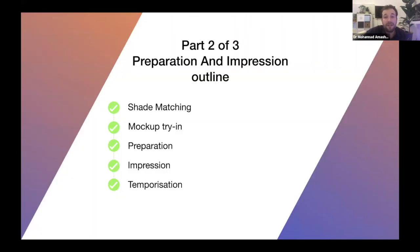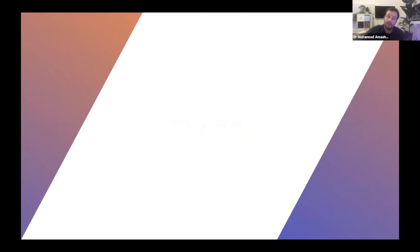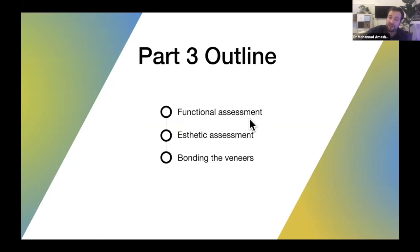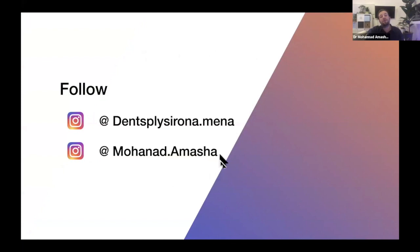That's everything for today — we're almost one hour in. I hope you found this informative. Next time in Part 3, we'll talk about veneer assessment when you receive them from the lab — how to assess them functionally, checking the fundamental healthy aspects, then assessing aesthetics, and finally preparing the tooth surface and ceramics for bonding and cementation. You can follow us on social media, and that's it for today.